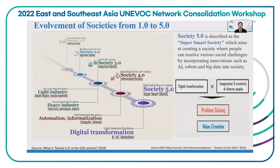Here we can find society developing from Society 1 to Society 5. Actually, every different society is matched with a different industry. For Society 5, it is matched with digital transformation. Society 5 is described as a super smart city, a super smart society, which aims at creating a society where people can tackle various social challenges by making use of digital technologies and digital transformation.